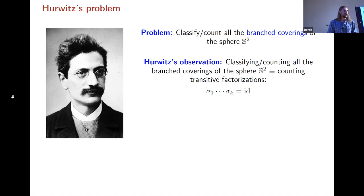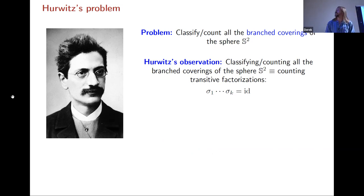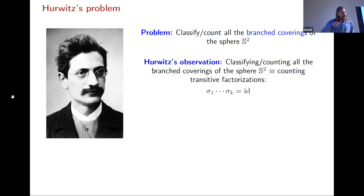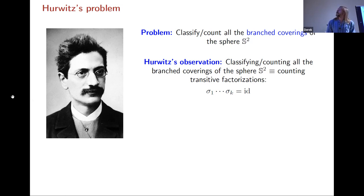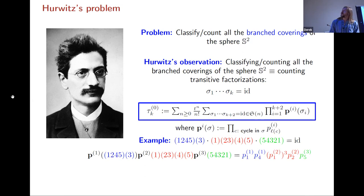...rephrase this problem in terms of a combinatorial problem. He said that understanding these branched coverings is essentially equivalent to counting transitive factorizations of the identity in the permutation group. A transitive factorization means that the group generated by σ₁, σ₂, up to σₖ acts transitively on points from 1 to n. So counting branched coverings is the same as counting factorizations in a permutation group — a much more combinatorial problem.